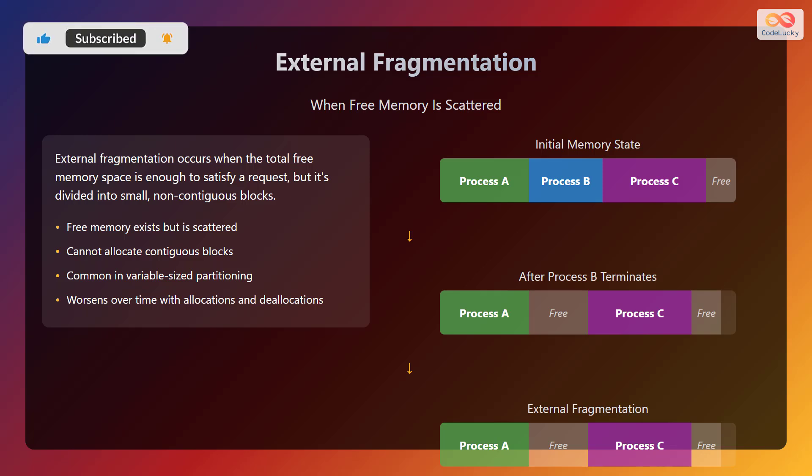Let us understand it with the help of an illustration. Initially, memory has process A, process B, process C, and some free space. After process B terminates, the memory has process A, then free space, then process C, and then free space. This is external fragmentation.